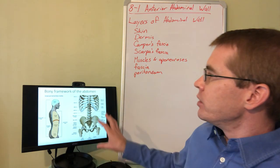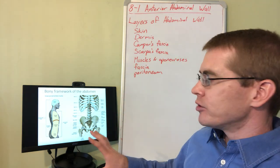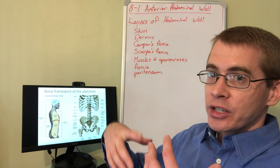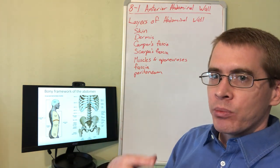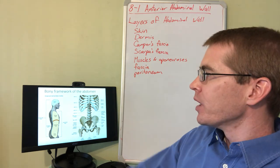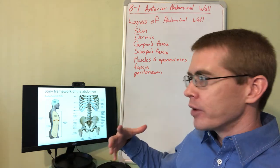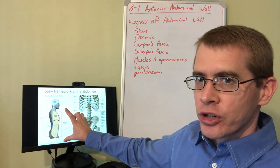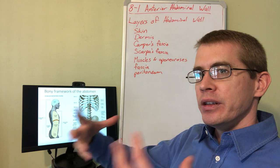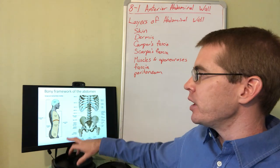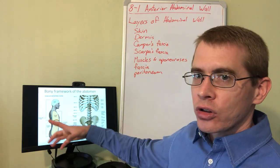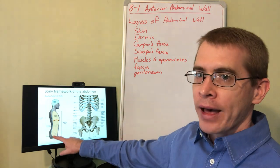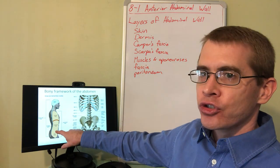We can also differentiate these structures based on their depth. We're discussing the peripheral anatomy right now — the musculoskeletal anatomy. Within the body there are also visceral structures, which we'll discuss in the next semester of lectures. The visceral structures are located deep to the body walls, and you can see the different visceral cavities identified in this diagram.